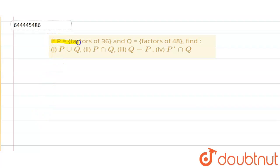The question that was given to us was: if P is equal to factors of 36 and Q is equal to factors of 48, find P union Q, P intersection Q, Q minus P, and P complement intersection Q.